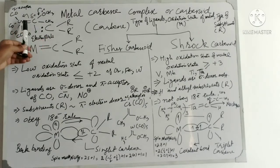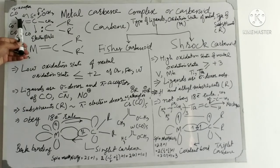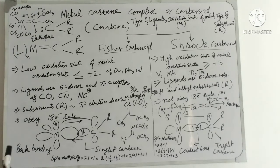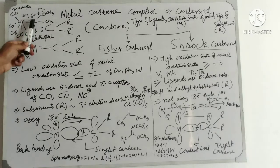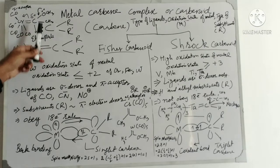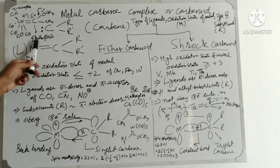The electron goes through the carbene to the metal, and in the metal, through the d orbitals, these ligands — which are attached — are sigma donors and pi electron acceptors. In the case of Fischer Carbenoid, this carbene carbon is electrophilic in nature.